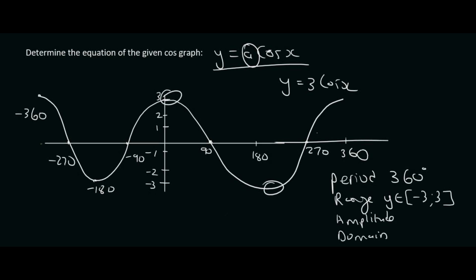The amplitude is the distance from the resting position, which is over there. So if we go up, we can see that it goes from 0 up to 3. So the amplitude is 3. Then the domain is just from minus 360 on this side up to 360. So we say x is an element from minus 360 up to 360.